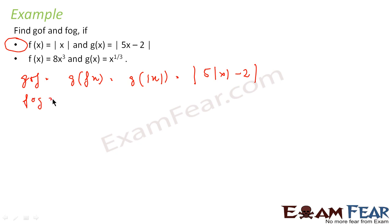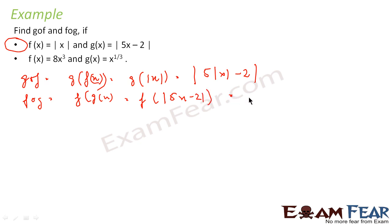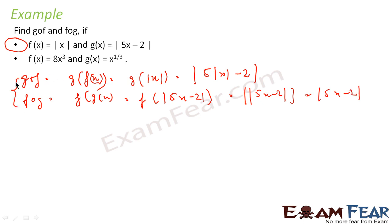To find f∘g, this is nothing but f(g(x)), which equals f(5x−2), which equals |5x−2|. Since the double modulus is the same as a single modulus, it is simply |5x−2|. So I have found both g∘f and f∘g for the first case.